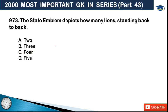Next: the state emblem depicts how many lions standing back to back? The answer is option C, 4. Our emblem shows four lions facing four directions. However, from the front you can only see three lions - the fourth one is not visible.